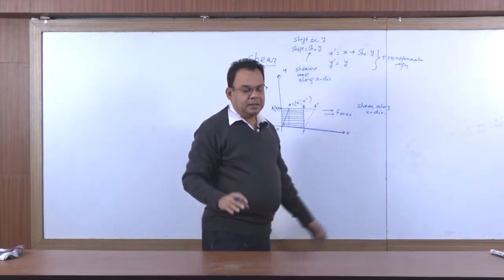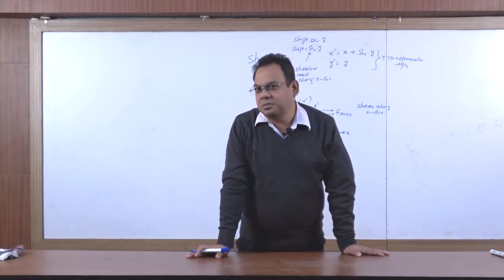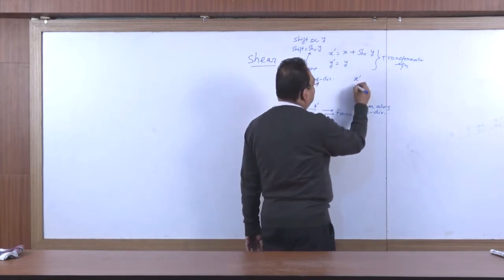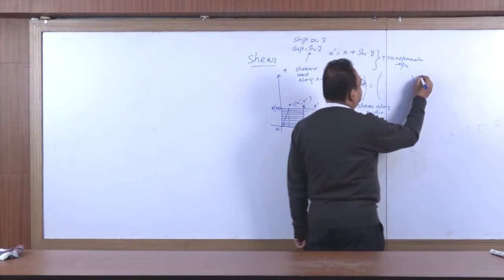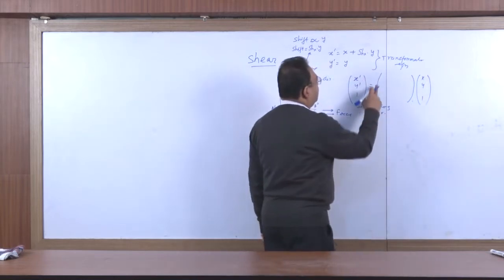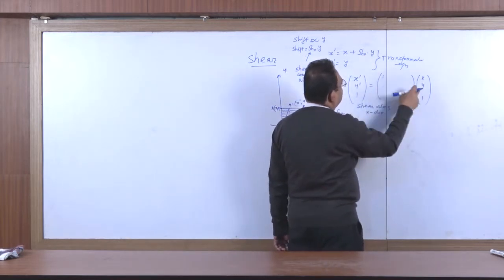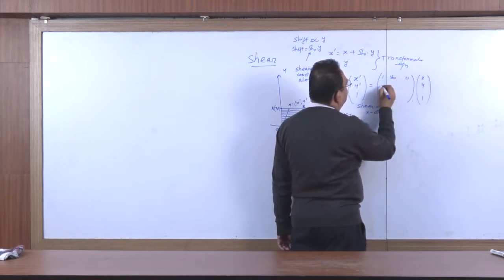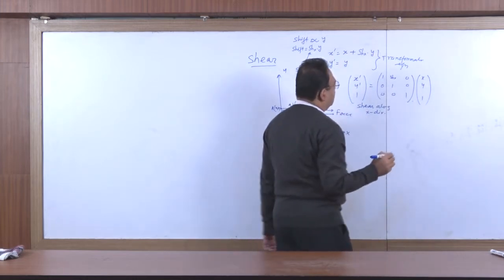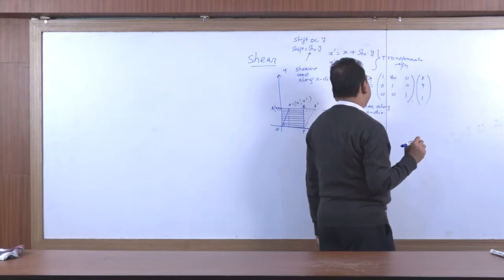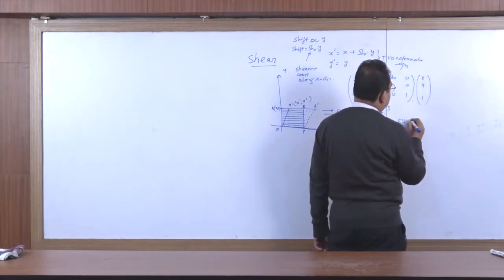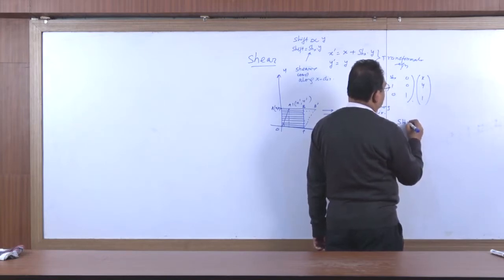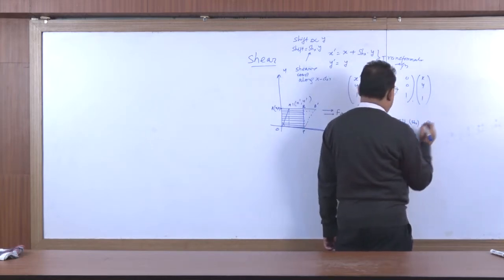Once we have the transformation equations, our next task is to represent them in the form of matrix operations. We can write [x', y', 1] equals a shear operator applied to [x, y, 1]. The shear operator matrix is: [1, SHx, 0; 0, 1, 0; 0, 0, 1], where x' = 1·x + SHx·y and y' remains y. We call this operator the shear operator SHx, and write p' = SHx · p.